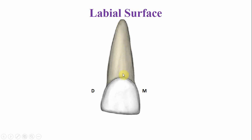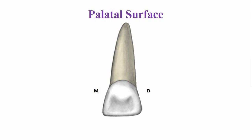The root appears longer from the cervical line to the apex as compared to the length of the crown. This is the palatal surface. On the palatal surface, this is the cingulum, which is more prominent if you compare it with the permanent central incisors.